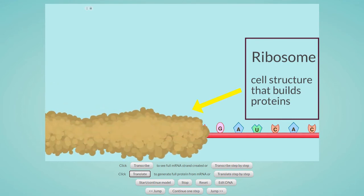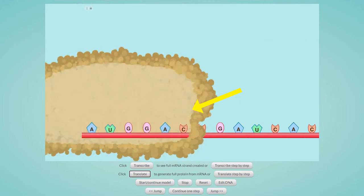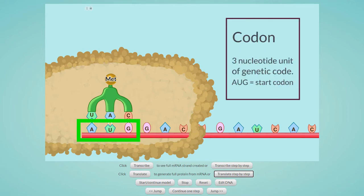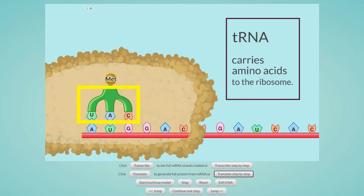A ribosome is a cell structure that builds proteins and is made of a large and a small subunit. The RNA sequence we just built will be read by the ribosome as a series of three-letter words or three bases. The three base unit is called a codon. The first codon to be read is AUG. AUG is often called the start codon and its bases are complementary to the anticodon to a transfer RNA, tRNA, which carries the amino acid called methionine, or MET for short.